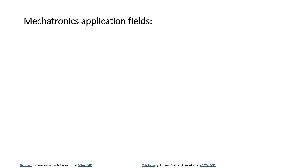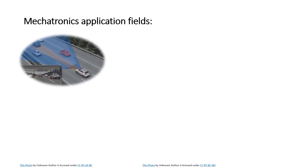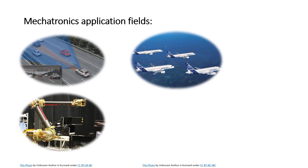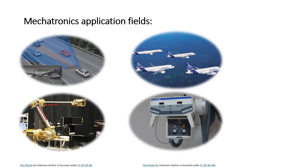There are a lot of fields where mechatronics is applied. In the automotive field we use mechatronics as a combination of electronic, mechanical, and control. In aerospace we use mechatronics systems. In automation and robotics we use mechatronics, and in medical devices we also use mechatronics systems, along with many other systems.